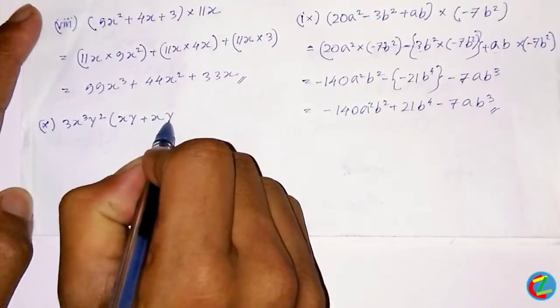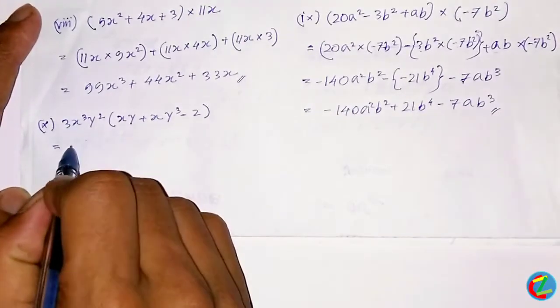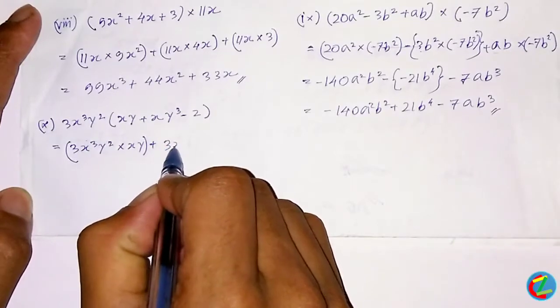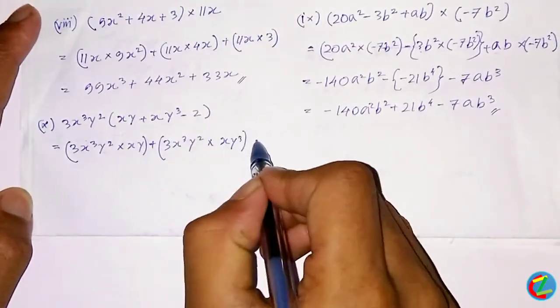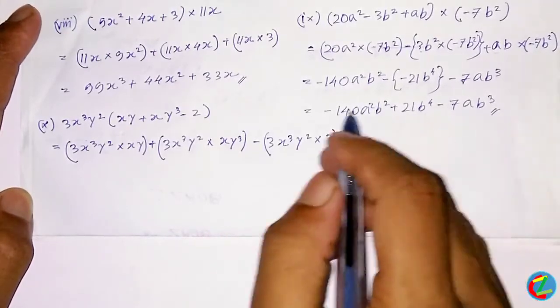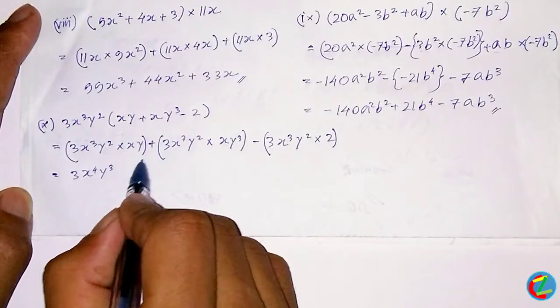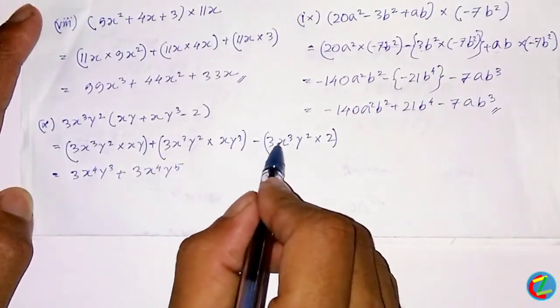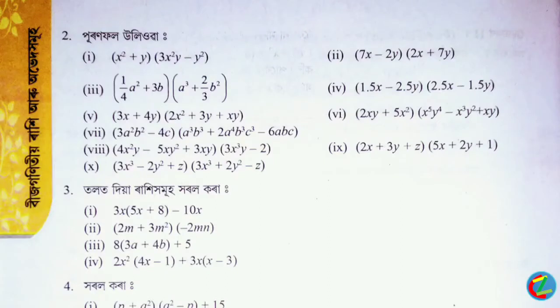3x to the power 3, y to the power 2, into xy plus xy cube minus 2 whole. 3x cubed y squared into xy plus 3x cubed y squared into xy cube minus 3x cubed y squared into 2. This gives x to the power 4, y cubed plus x cubed y to the power 5 minus 6x cubed y squared.